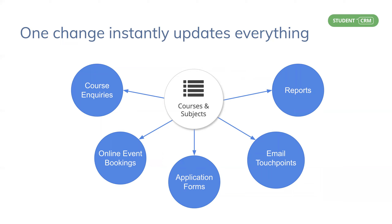Your online application forms update with correct course changes automatically, and course matching by code ensures that the new courses are immediately recognized in Student CRM, as it can tell the difference between the same UCAS course code N103 for business management in year 2021 and the same course in year 2022.